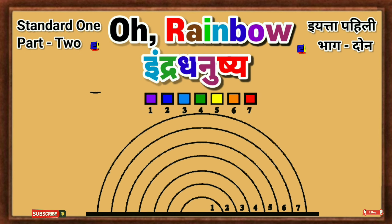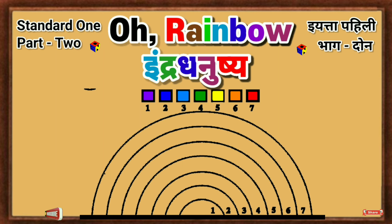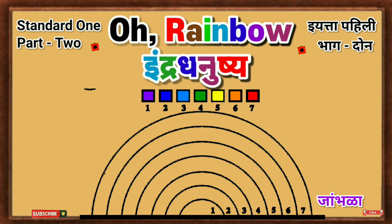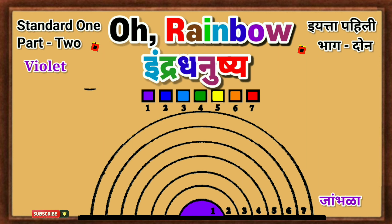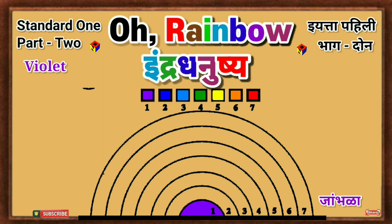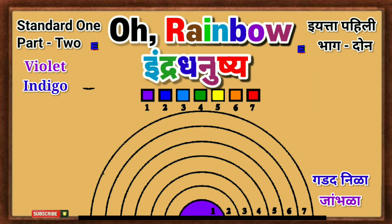Children, like the rainbow in the sky, there are seven colors. Let's fill the rainbow with the same colors in the same order. Pahiliya patti madhi jambada rangabhara — fill the first strip with violet color. Varil Dusriya patti madhi gadad nila rangabhara — add indigo color to the second bar above.